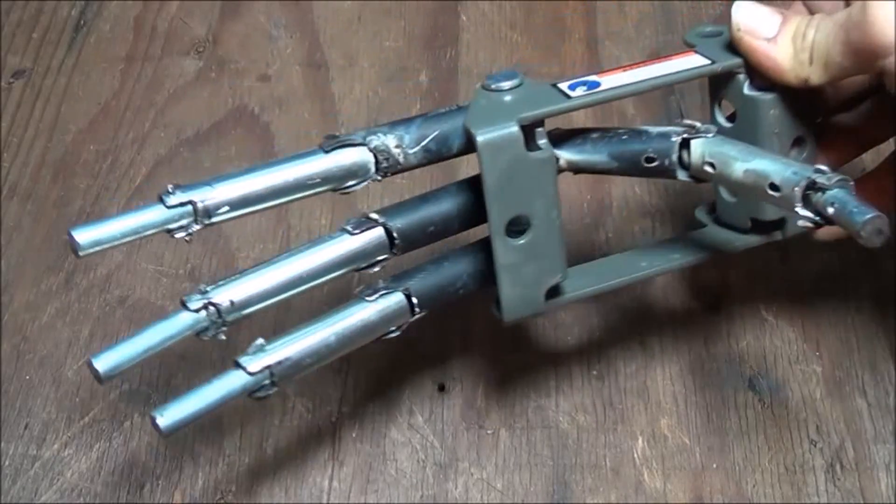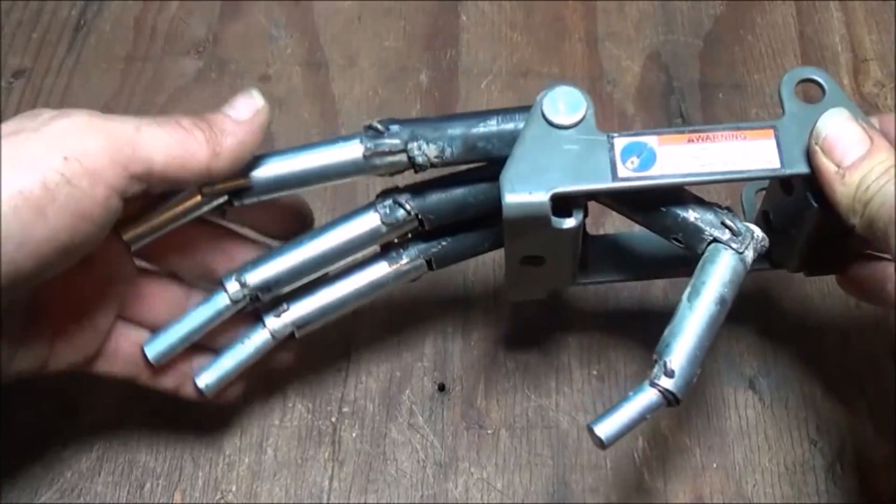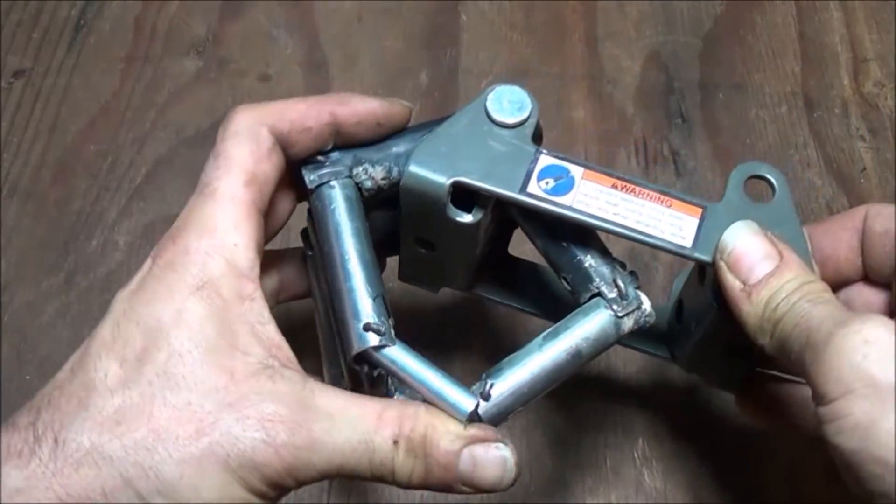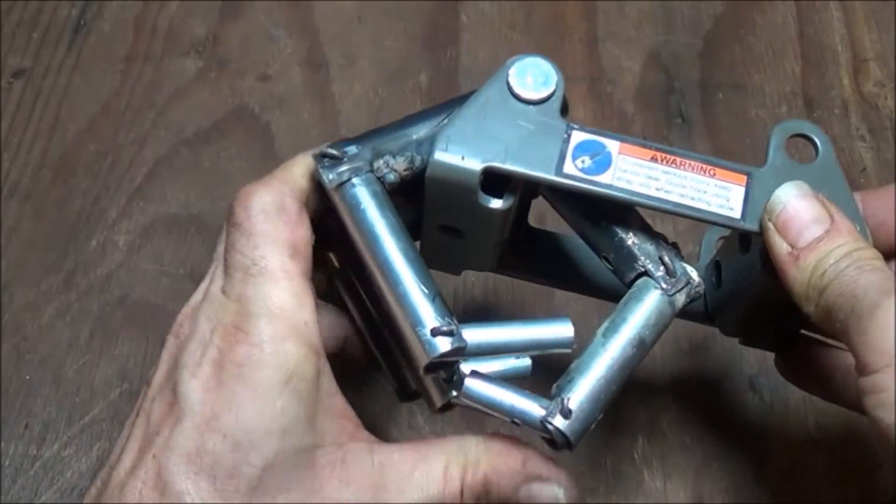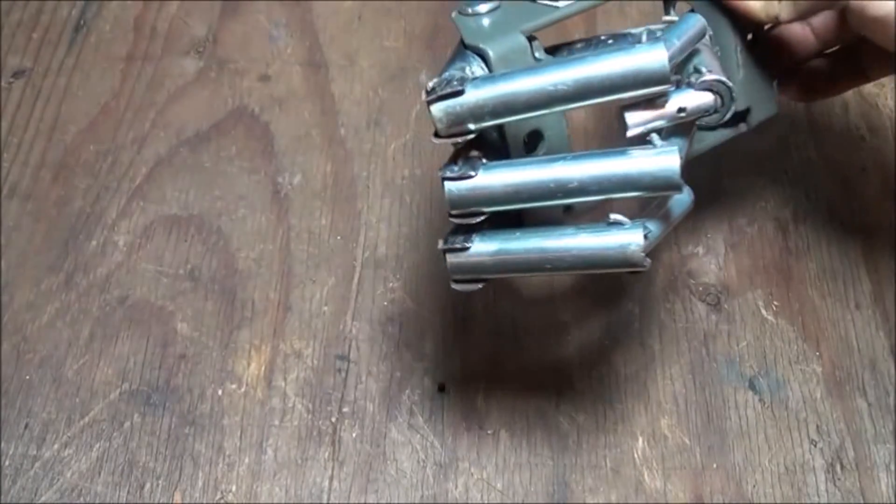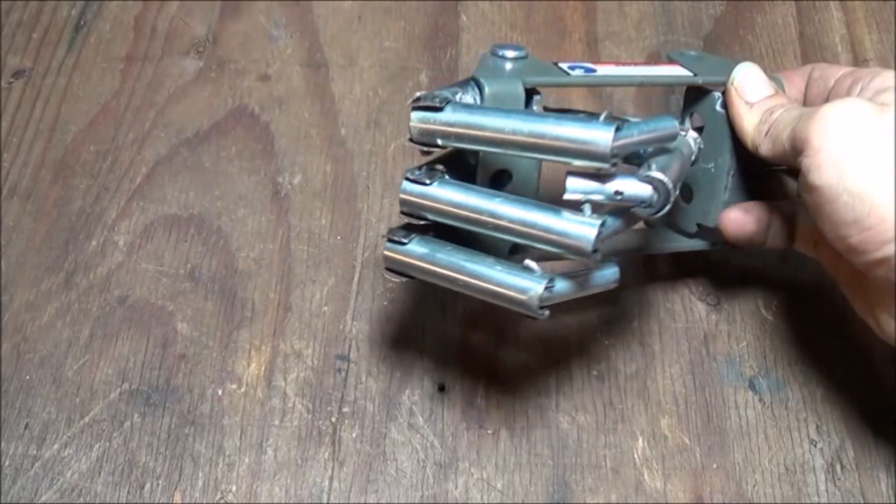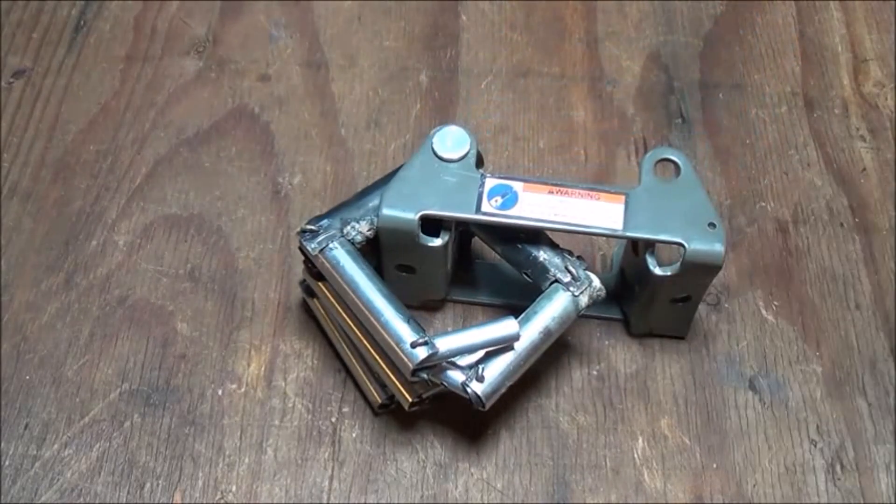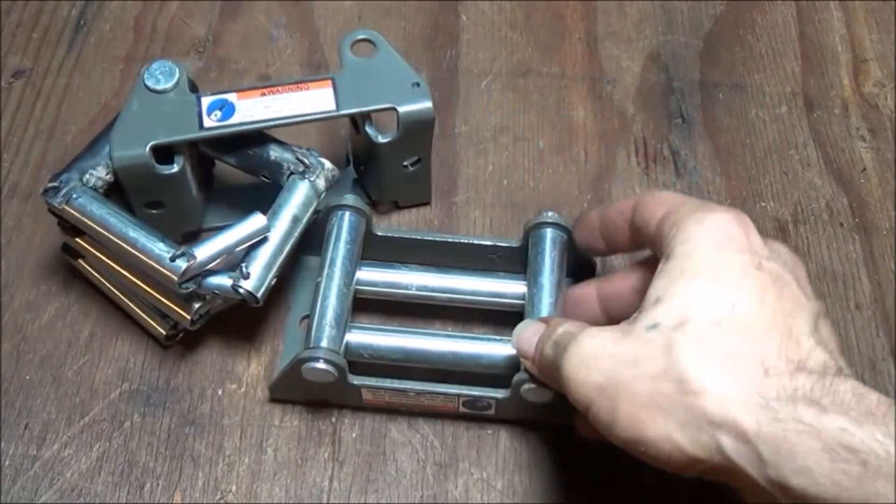Right now, as you can tell, we've got a nice open hand. It'll close around an object really well. So all together, when it closes down into a solid fist, it'll look just like this. If I hold it there for you, you can see the look of our robotic hand.